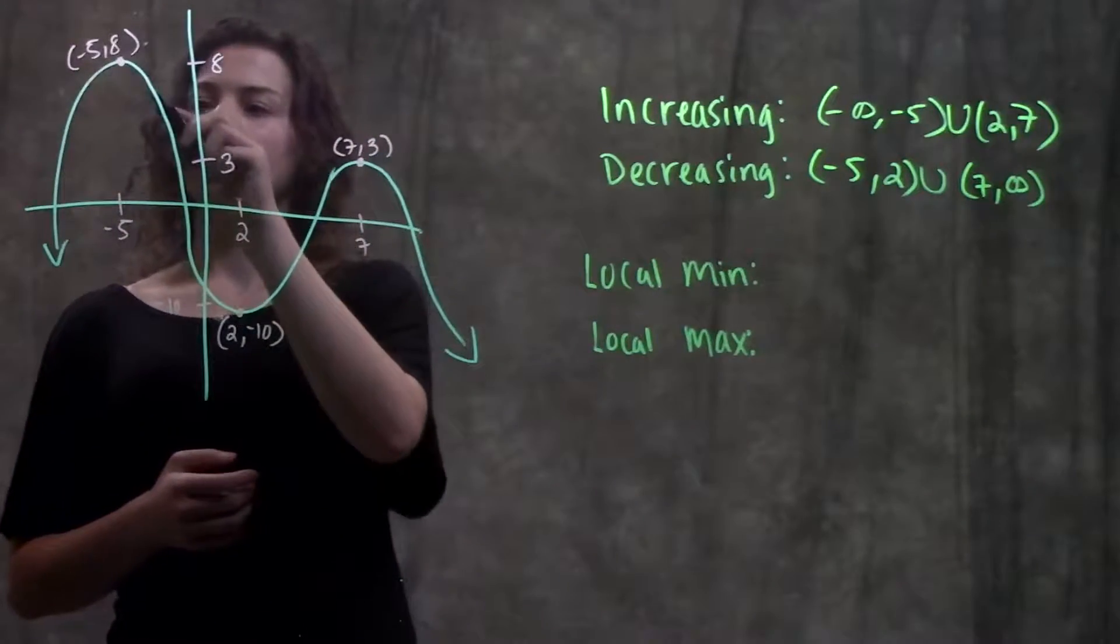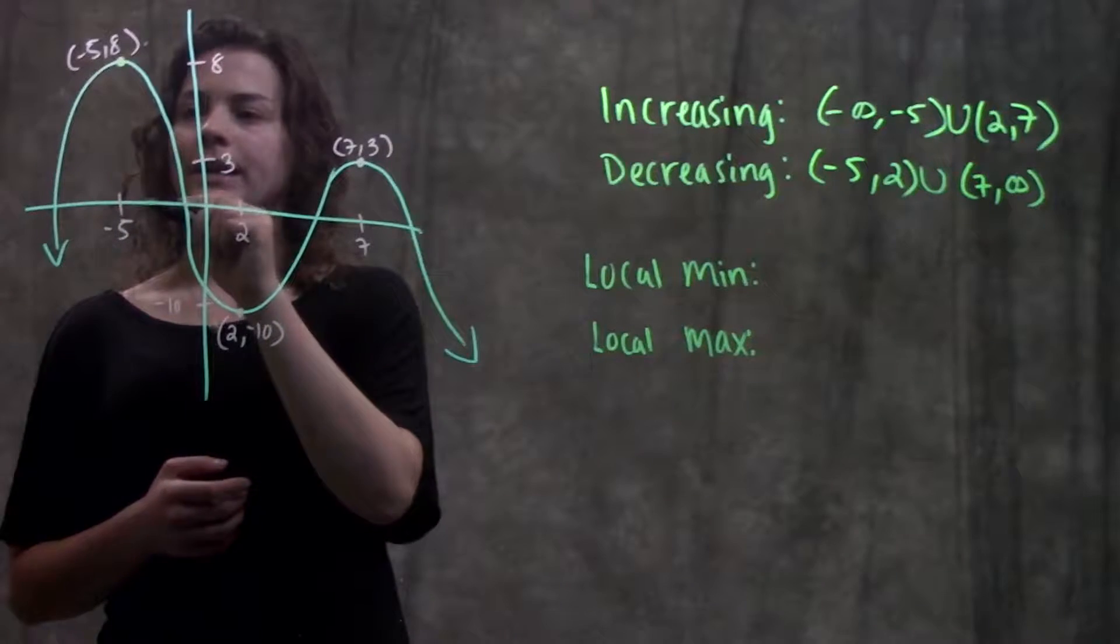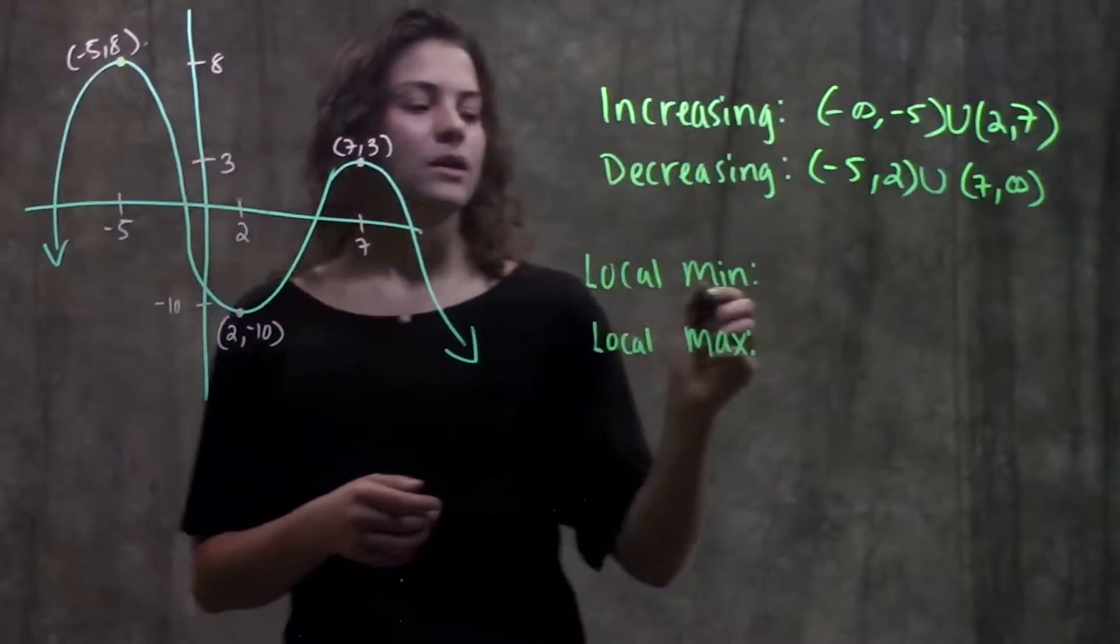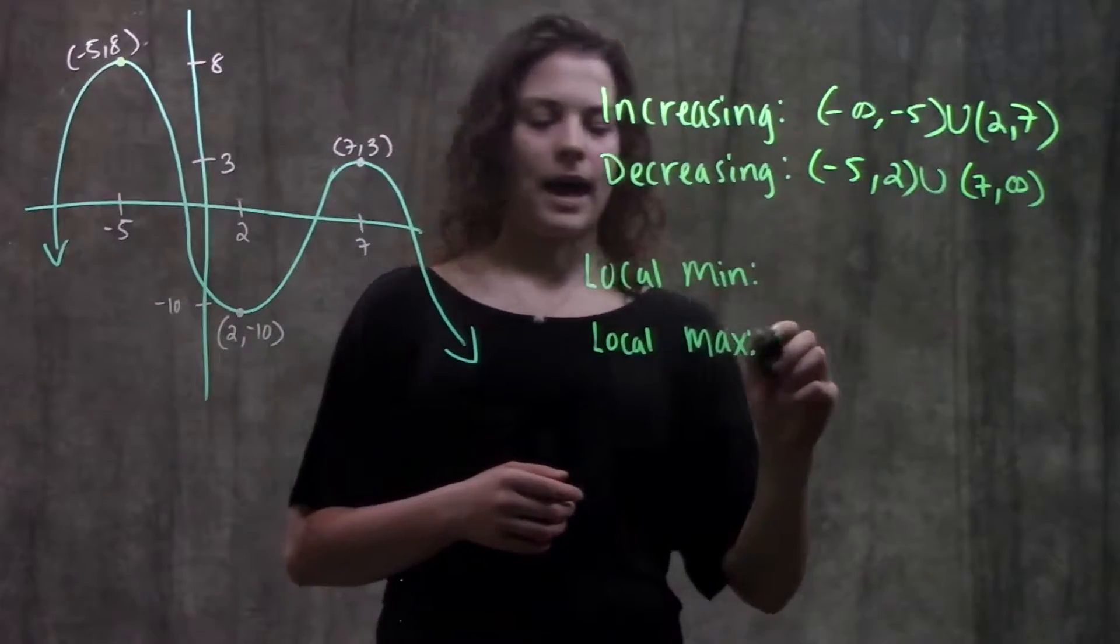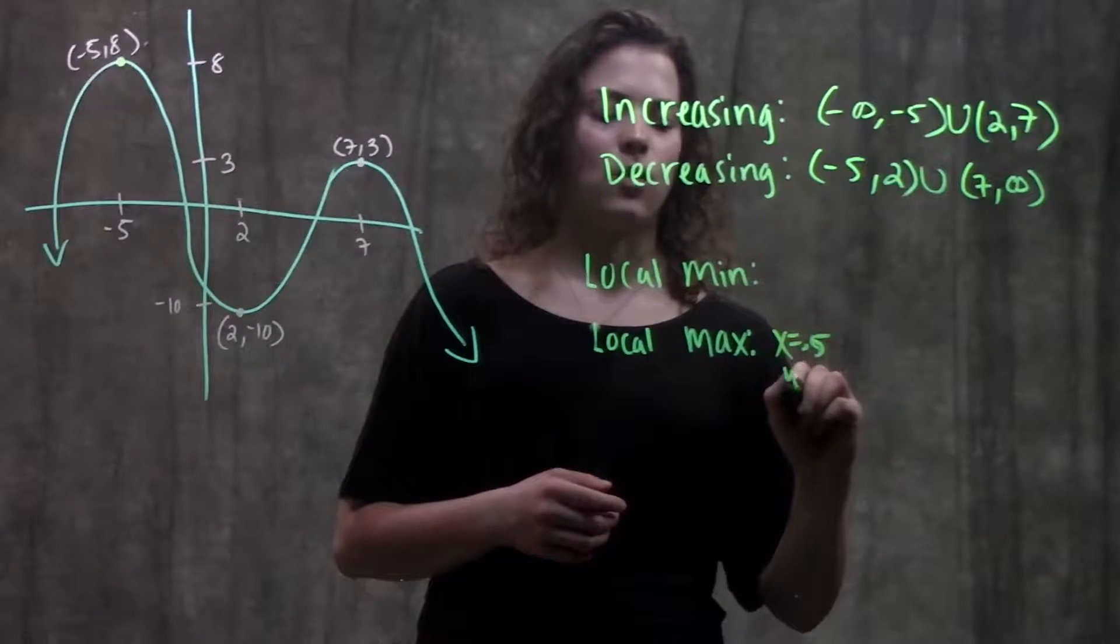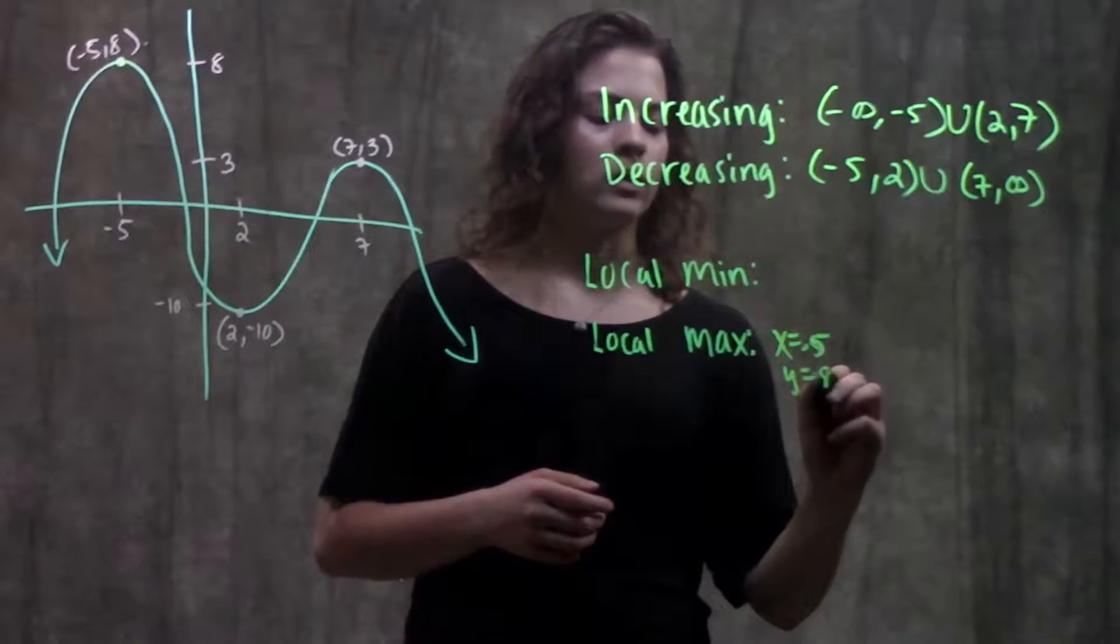We see here we have the top of the hill right here. It's going from increasing to decreasing, so up here we have a max. We have a local maximum at x equals negative 5, and the y-value is y equals positive 8.